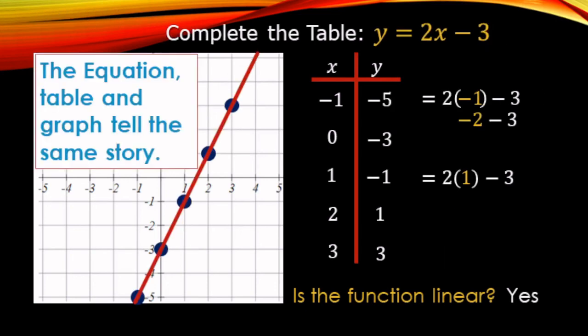Remember: the equation, the table, and the graph all tell the same story in different formats. The table has number examples, the equation is algebraic, and the graph is a visual representation. Your linear functions are the straight-line ones. If it makes a curve, a U, or a V, those are not going to be linear functions.